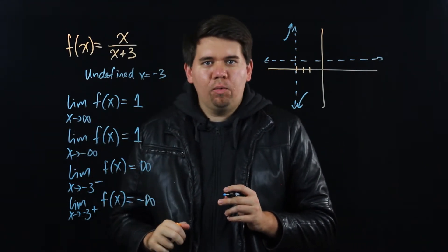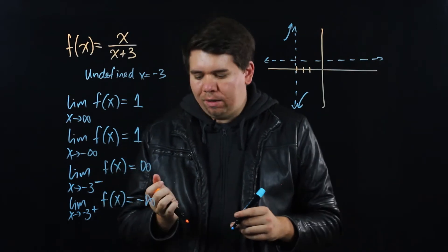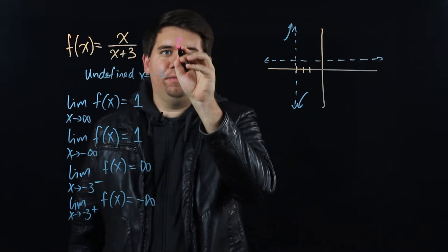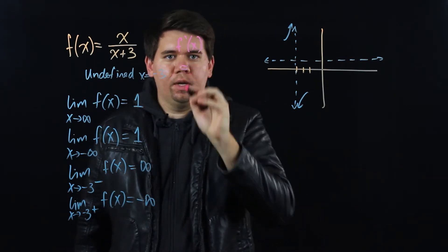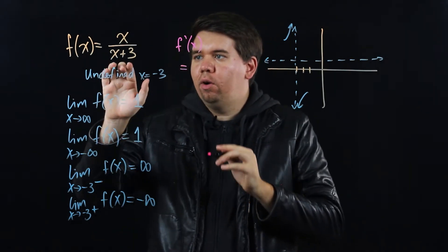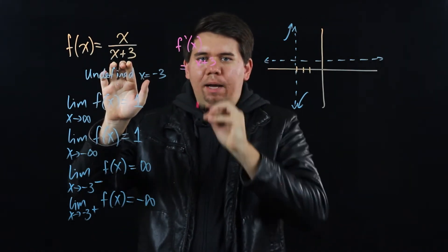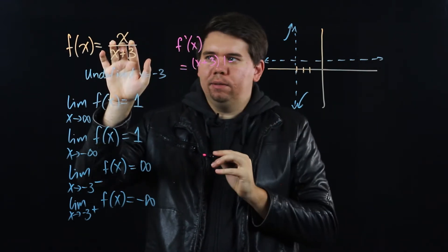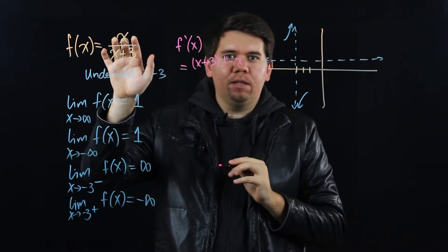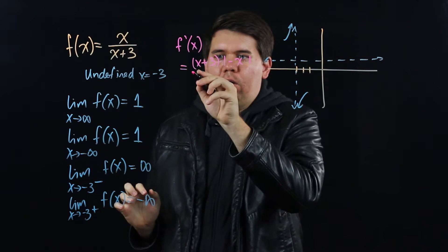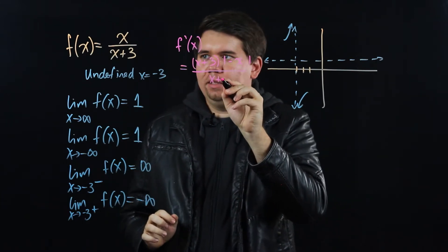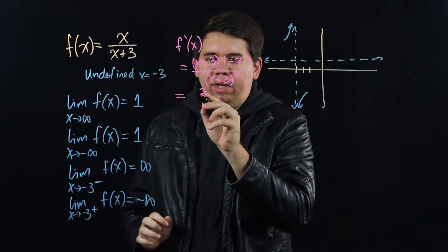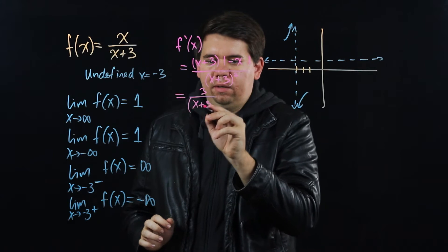Now that we have the limits, let's think about what the first and second derivatives tell us. To find f'(x), since it's a quotient we use the quotient rule: hold the bottom times the derivative of the top (which is 1), minus hold the top times the derivative of the bottom (also 1), all divided by the bottom squared, (x+3)². This simplifies to 3 over (x+3)².